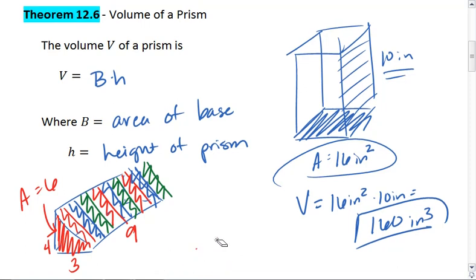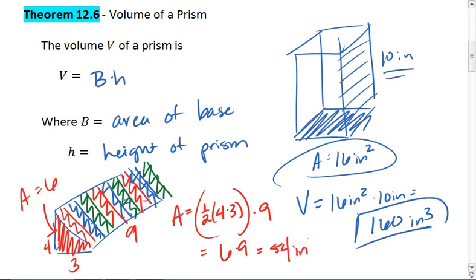So in summary, the volume of this triangular prism is the area of the base, which is one-half times 4 times 3, times the height. This gives us 6 times 9, which gives us 54 inches cubed.